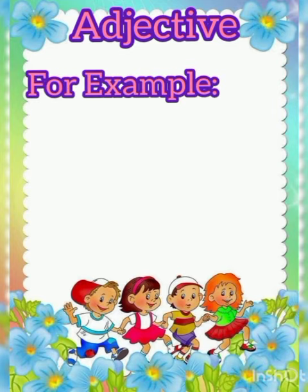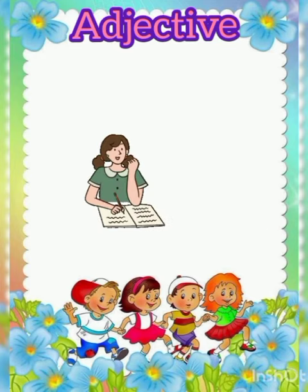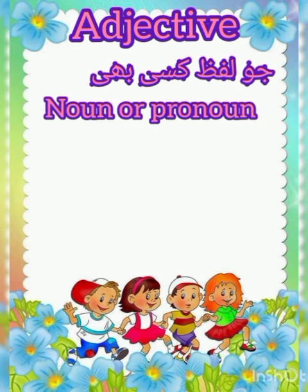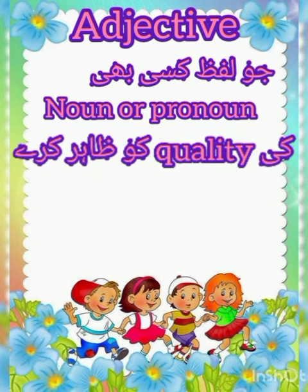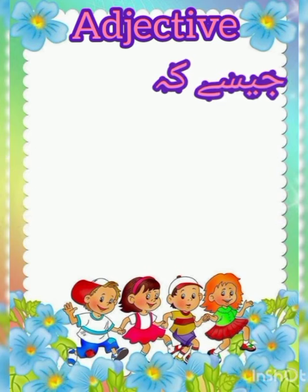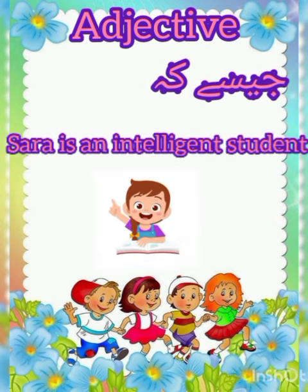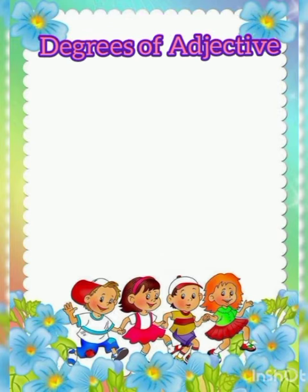For example: beautiful, honest. When we express the quality of a noun or pronoun, we call it an adjective. For example, Sara is an intelligent student. Here, intelligent is Sara's quality. Then we will talk about degrees of adjective.